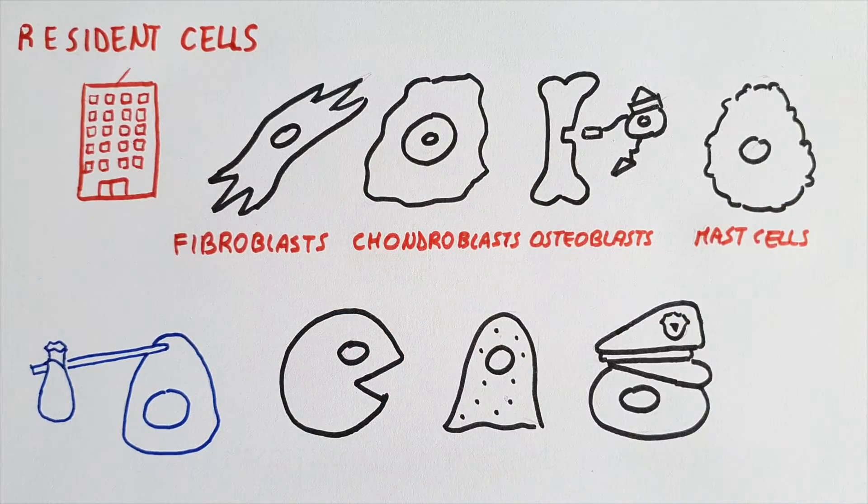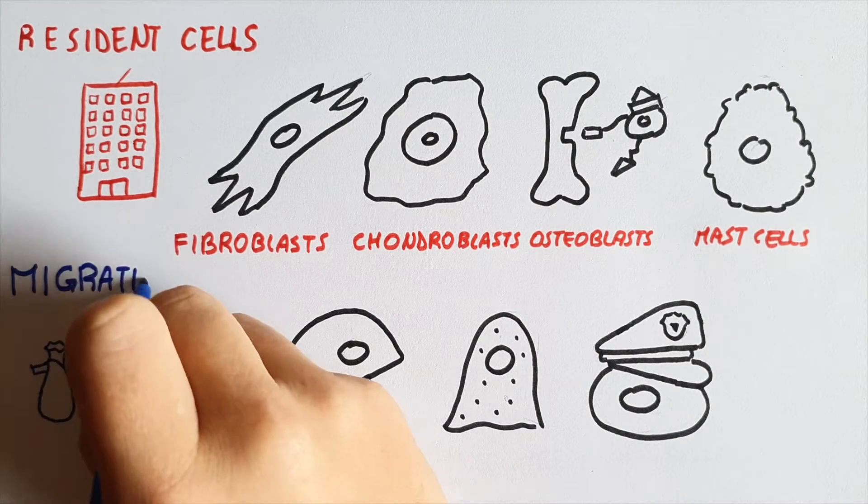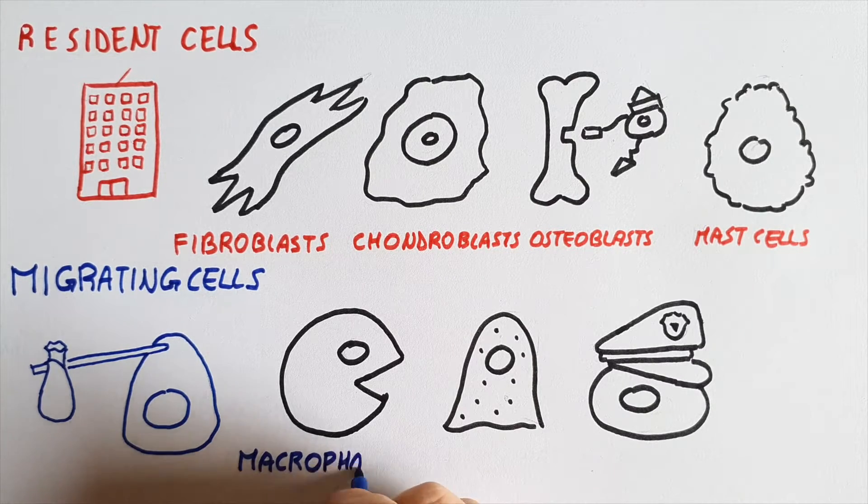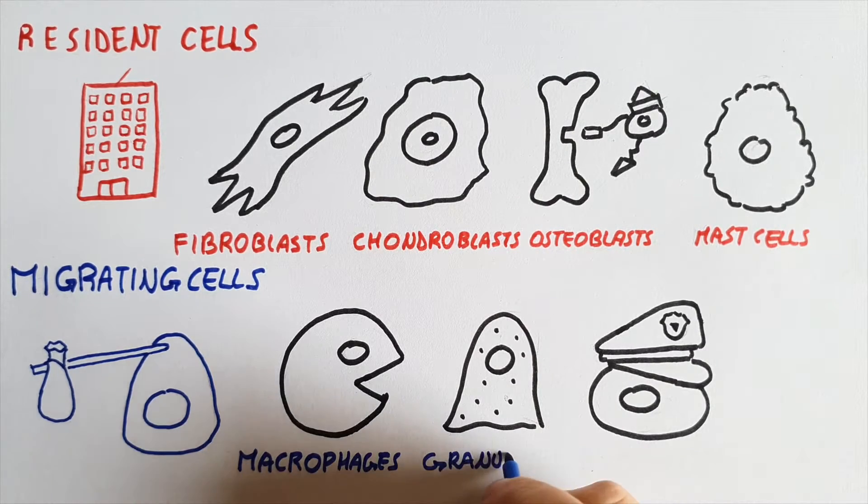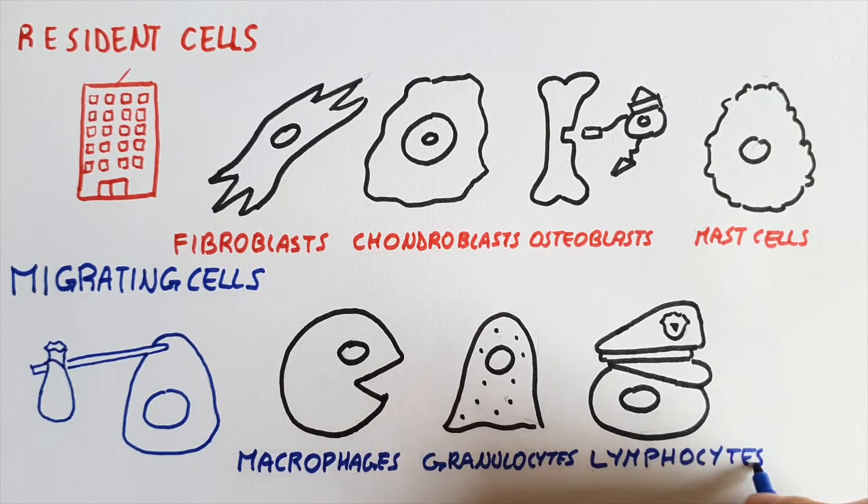Then there are migrating cells that are usually found in the bloodstream, however they are able to extravasate in order to carry out their role related to the immune response. Among them there are macrophages, granulocytes, and lymphocytes.